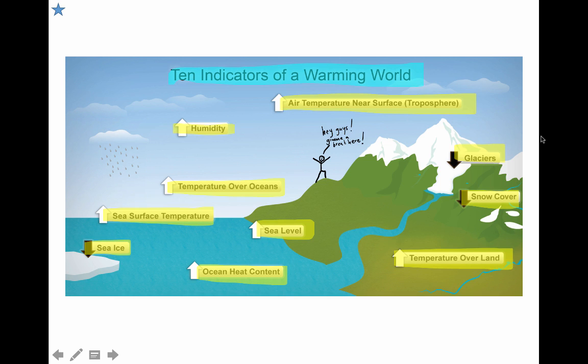The gases that are trapping this radiation we know as greenhouse gases, and we're going to talk more specifically about each of them in a bit. But first, let's take a quick commercial break as we take a look at 10 indicators of a warming world. Pause the video and see if you can identify which ones you already knew.